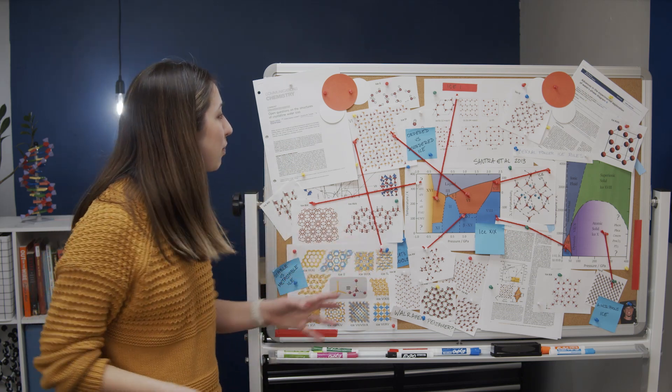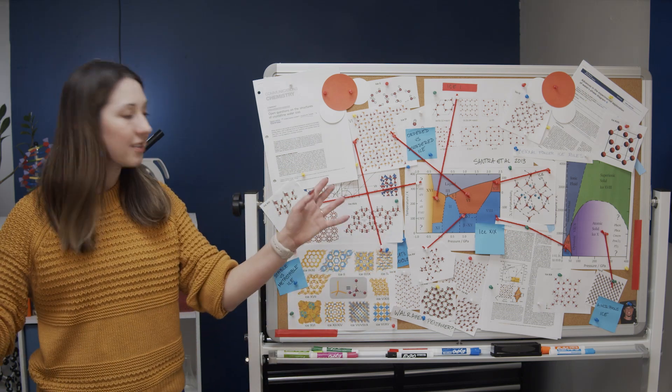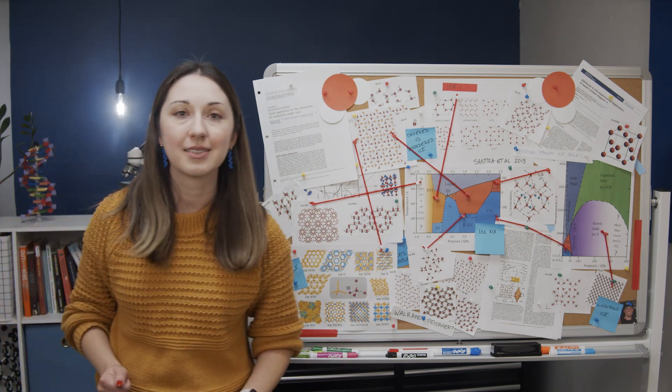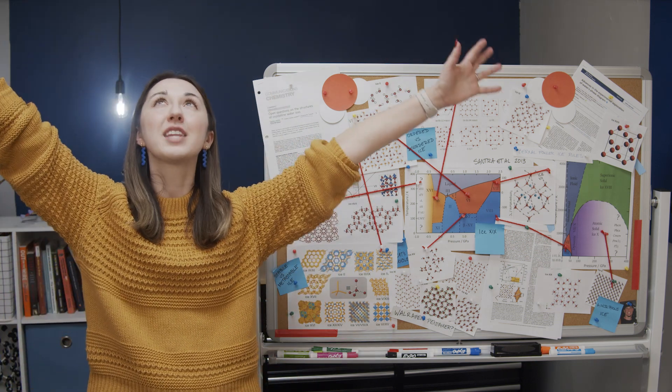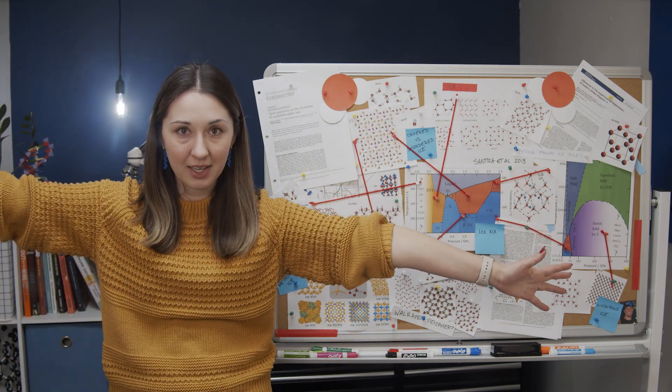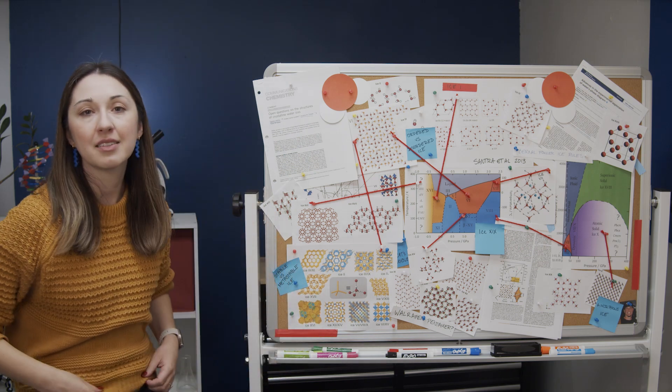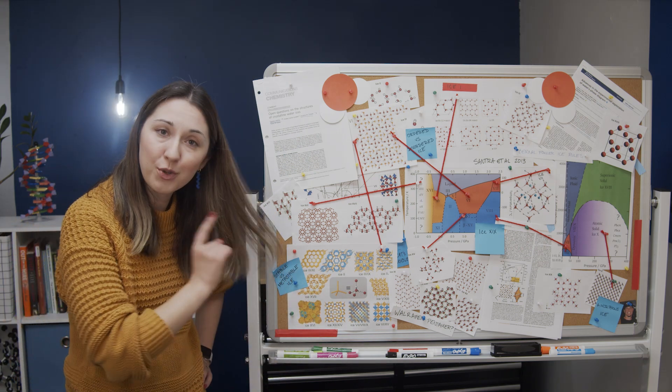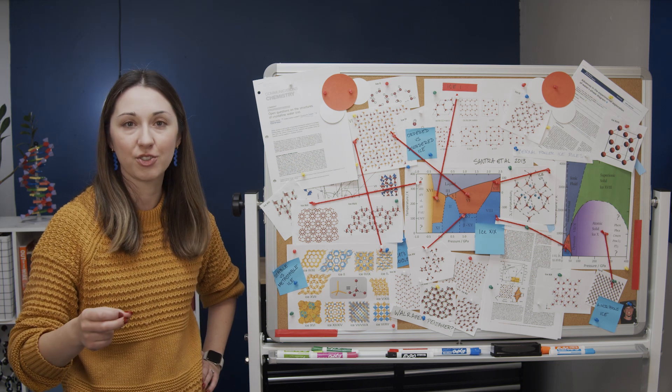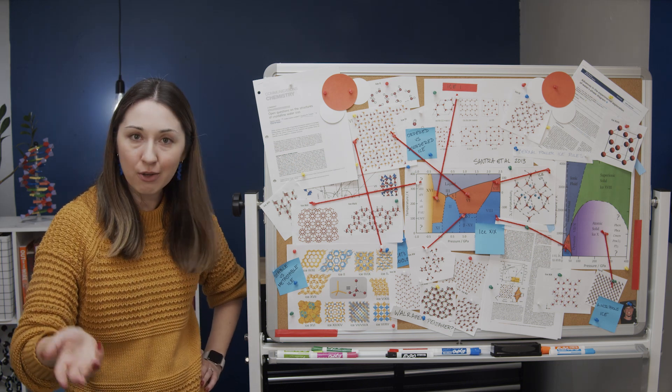So is that it? Do we just stop at 20-ish phases of ice and call it a day? Absolutely not. In fact, a recent computational study found the potential structures for 74,963 types of ice. So no, science is not done with ice structures. But to name a structure, to add to that Roman numeral list, you have to experimentally show the crystal structure. And so for now, we're still waiting on ice 21.